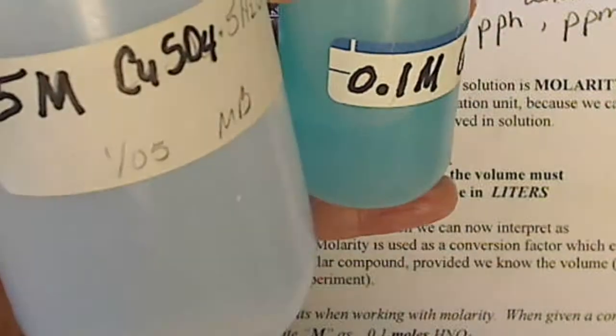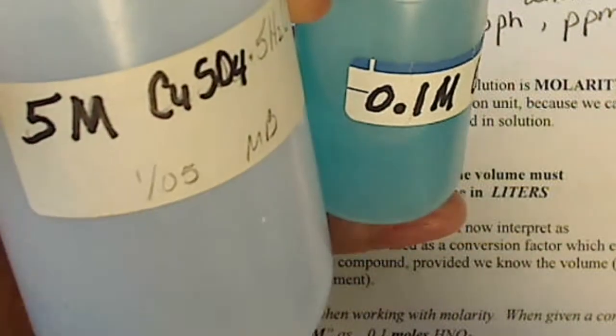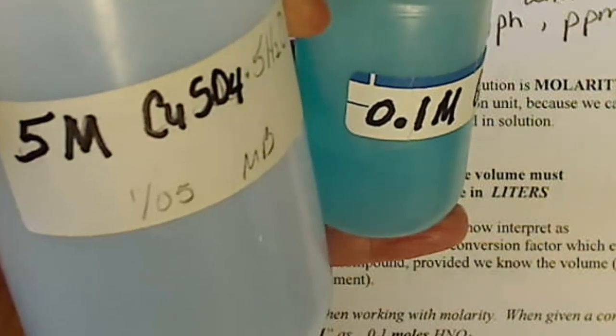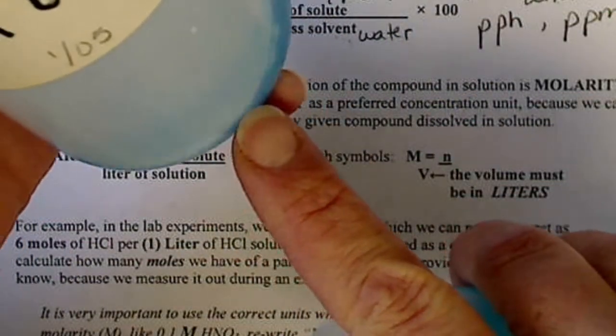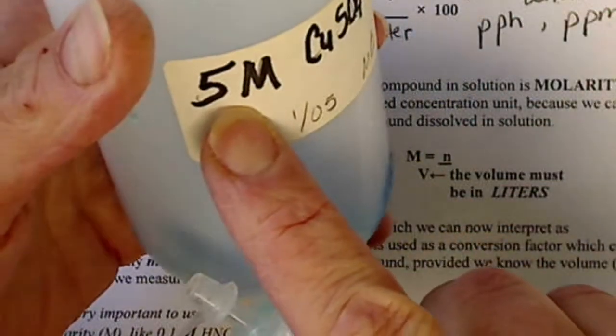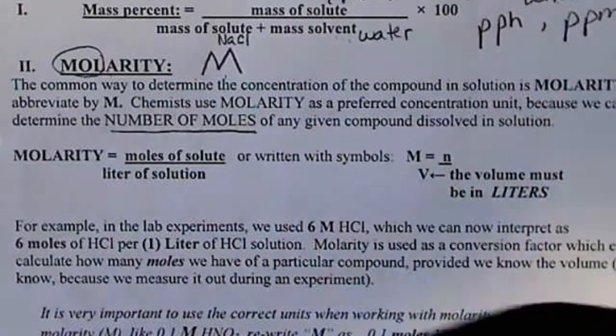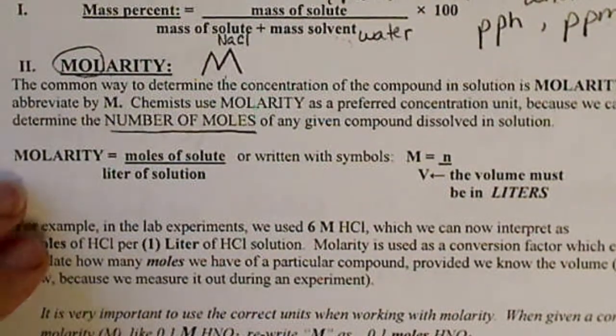So we are going to figure out a way using this capital M to solve for moles. And it should make sense that the number of moles that are in a sample depends on how concentrated that sample is.